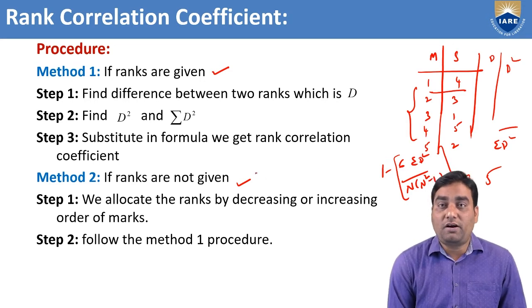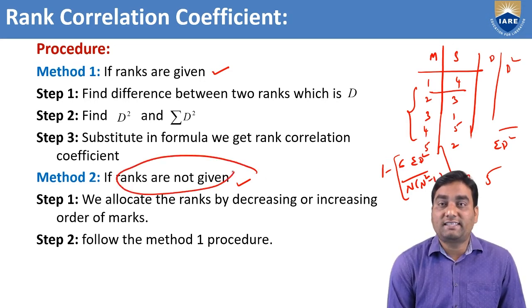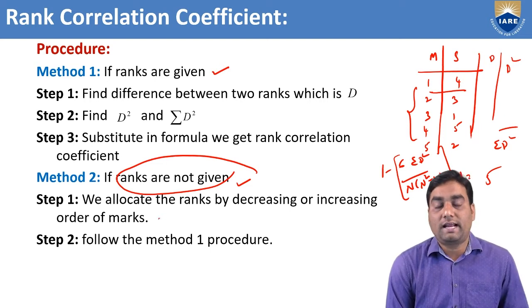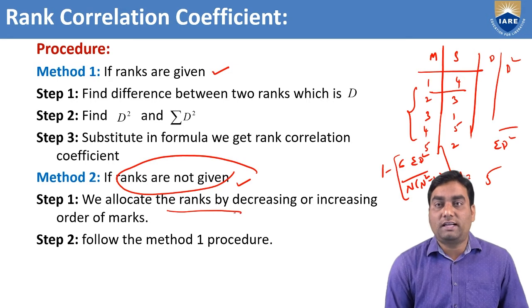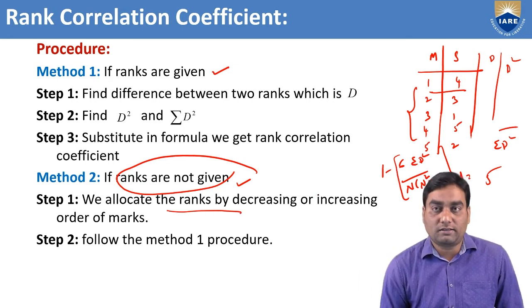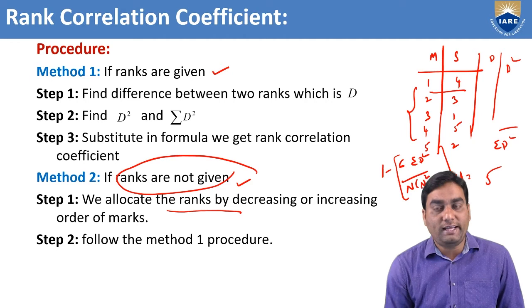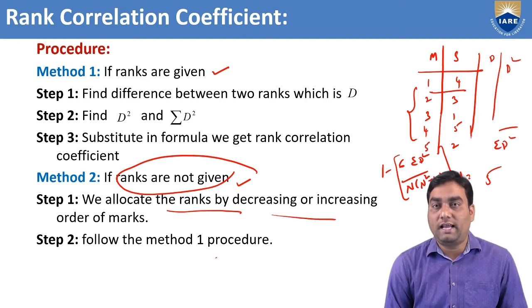Sometimes, instead of ranks, only marks are given and ranks are not given. In that case, we allot the ranks based on the marks — either in decreasing order or increasing order, we should allot the ranks. The remaining process is the same.